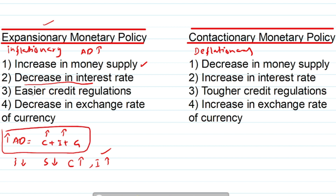Easier credit regulations also increase economic activity. Credit regulations refer to the process of advancing loans. When regulations are easier, getting loans from financial institutions requires less documentation and fewer procedures, so more people get loans for spending as well as investing money into business.